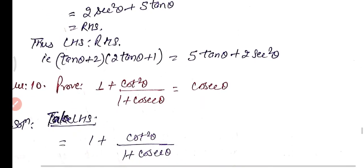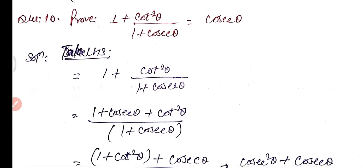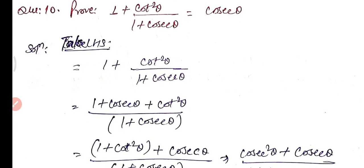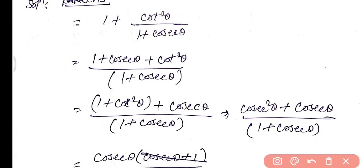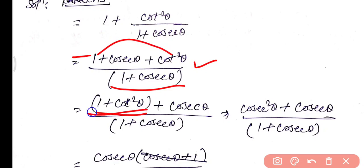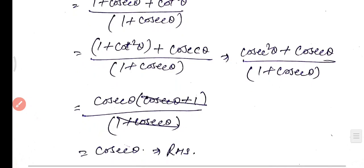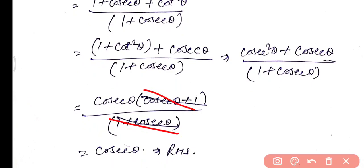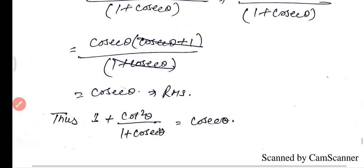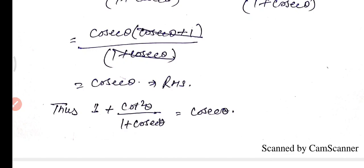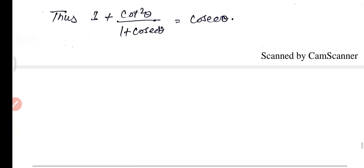Question 10: Prove that (1 + cot²θ) / (1 + cosec θ) = cosec θ. Taking the LHS, substituting 1 + cot²θ = cosec²θ, we get cosec²θ / (1 + cosec θ) + the numerator rewritten as cosec θ(cosec θ + 1) / (1 + cosec θ). Cancelling (cosec θ + 1) from numerator and denominator, we get cosec θ, which is the RHS. Hence proved.